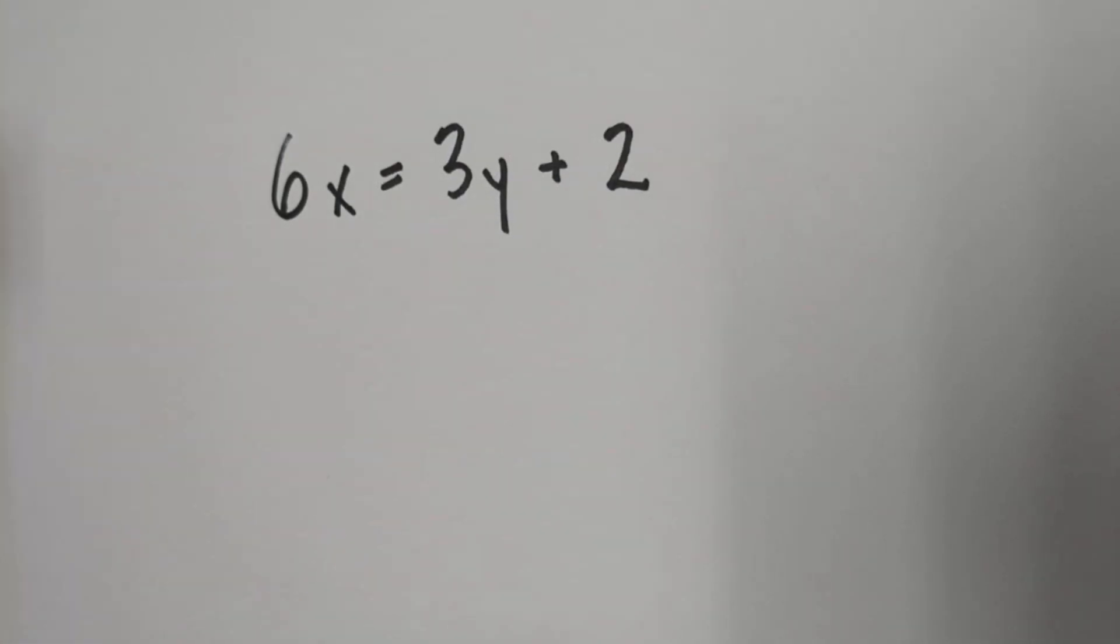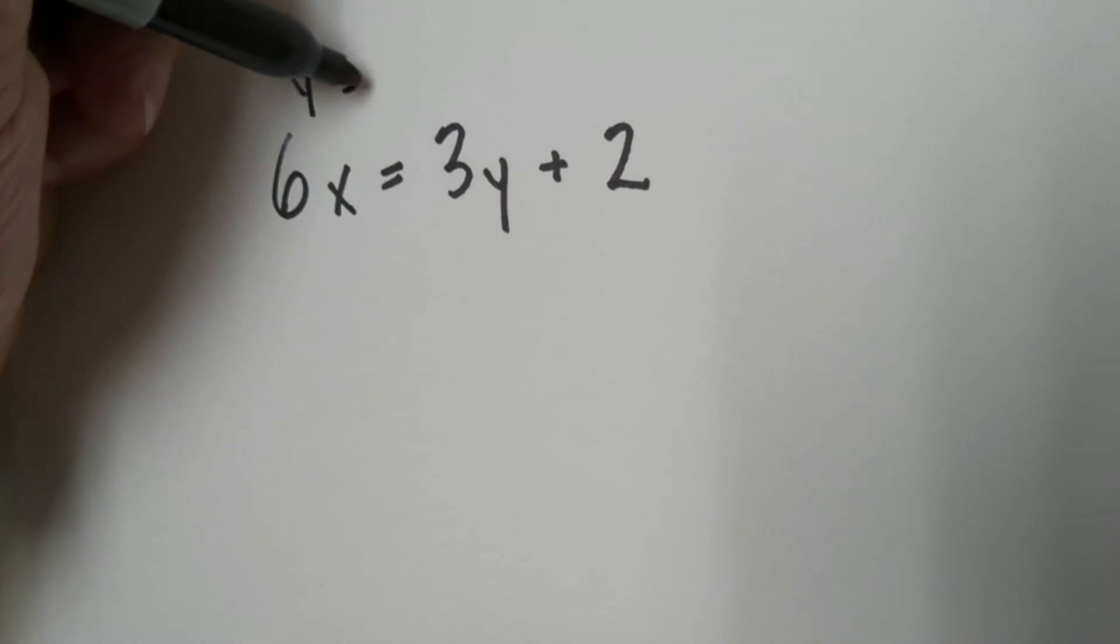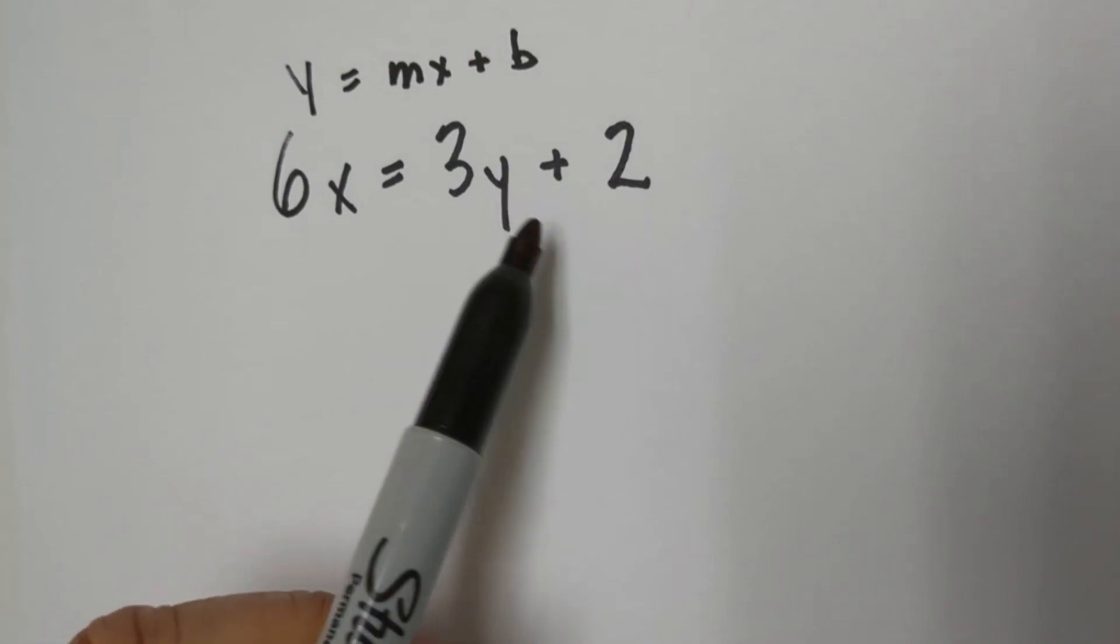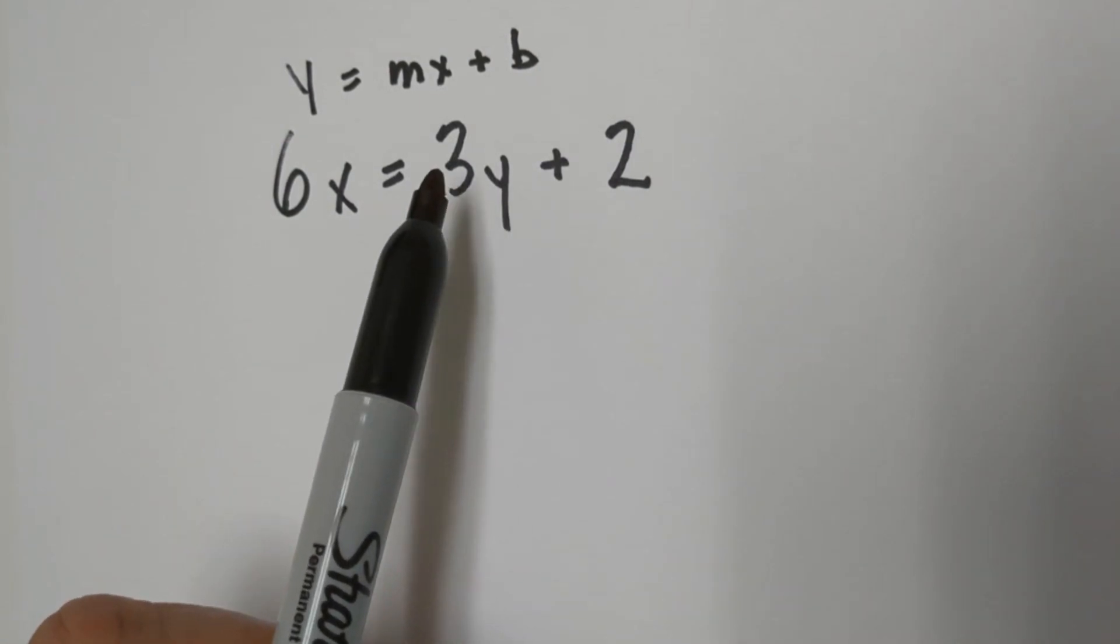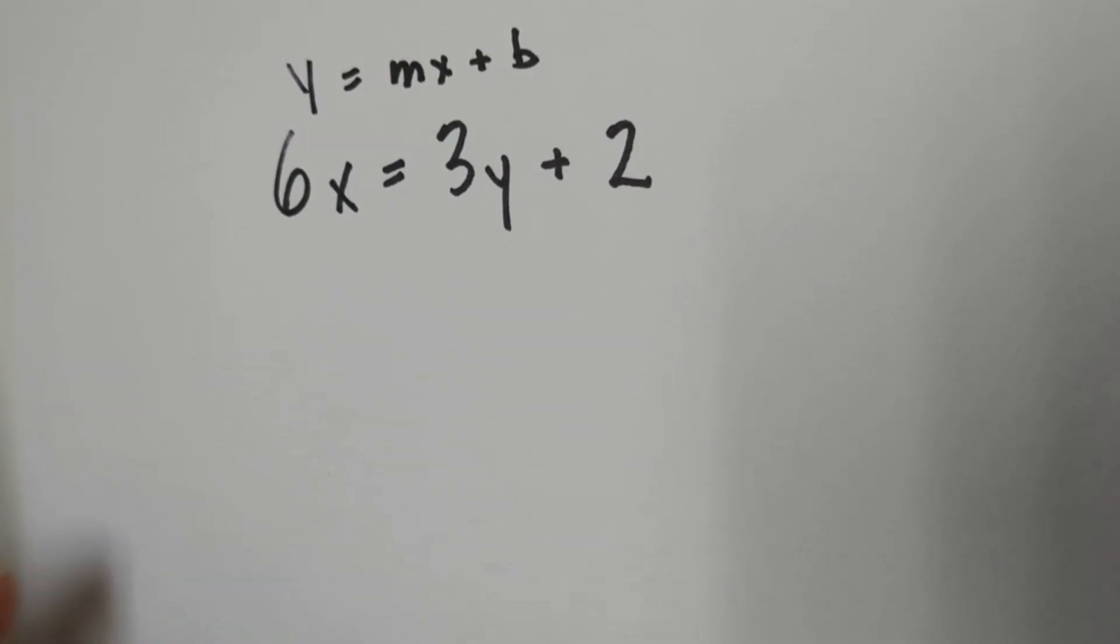Okay, let's take a look at this one and let's move it into slope-intercept form. Remember it's y equals mx plus b. When we take a look at this, we can see that y is not by itself and it's also on the other side, but we can figure out how to solve this.